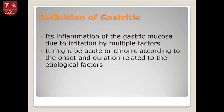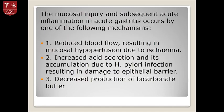Gastritis may be acute or chronic according to onset and duration. The etiological pathogenesis of mucosal injury in acute gastritis occurs by one of the following mechanisms: reduced blood flow resulting in mucosal hypoperfusion due to ischemia, decreased blood flow, increased acidic secretion and its accumulation due to H. pylori infection resulting in damage to the epithelial barrier, and decreased production of bicarbonate buffer.